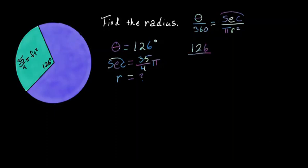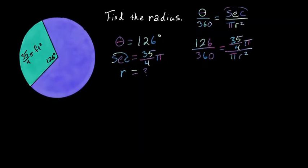126 over 360 is equal to 35 over 4 pi divided by pi r squared. Once again our pi's cancel out. Pi divided by pi is 1, and now we can cross multiply and divide.